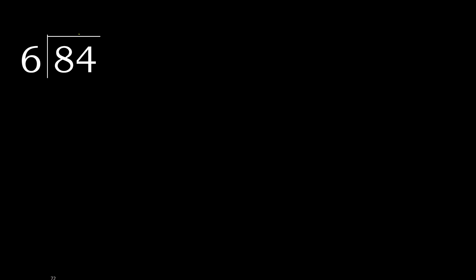84 divided by 6. 8 is not less, therefore with 8. 6 multiplied by which number is nearest to 8 but not greater? 6 multiplied by 2 is 12, is greater. Multiplied by 1 is 6, is not greater. 8 minus 6 is 2.